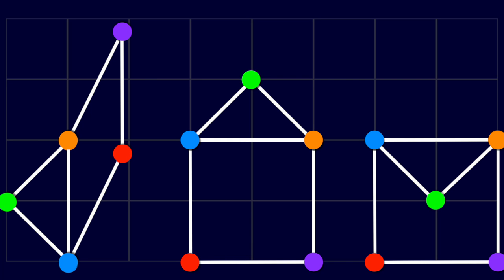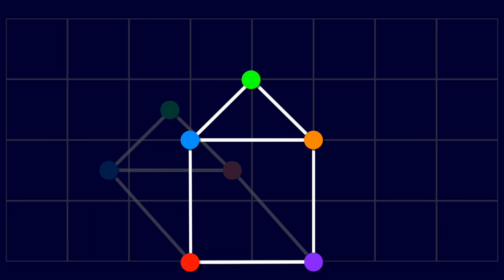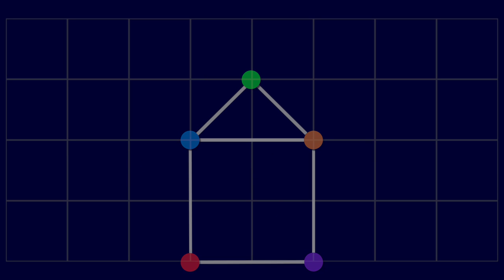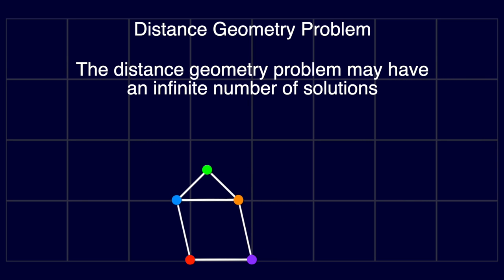In this specific example of the house, we even have an infinite number of different combinations in which we can place the vertices. This leads us to an important note about the problem that we are trying to solve. The distance geometry problem may have an infinite number of solutions.